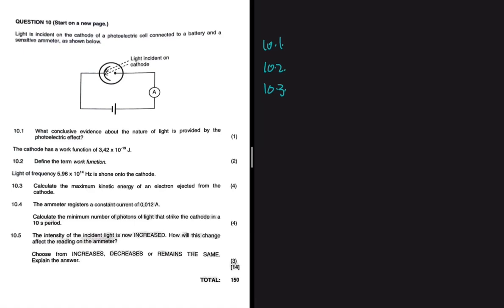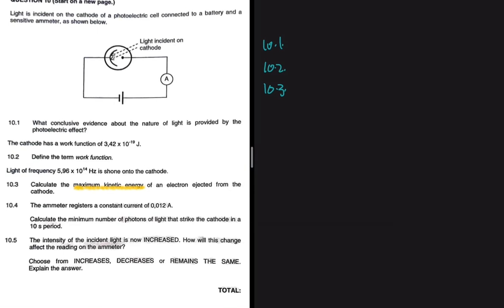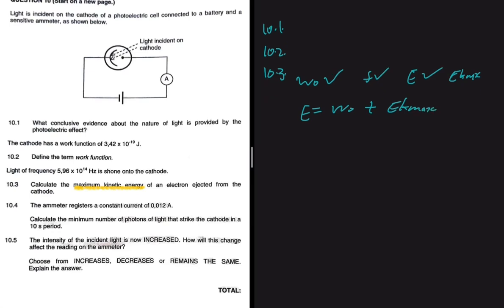Question 10.3 states that light of frequency 5.96 times 10 to the 14 hertz is shone on the cathode. We need to calculate the maximum kinetic energy of an electron ejected from the cathode. We're given the work function and the frequency, so we can calculate the energy. The formula we'll use is: energy equals the work function plus EK max.